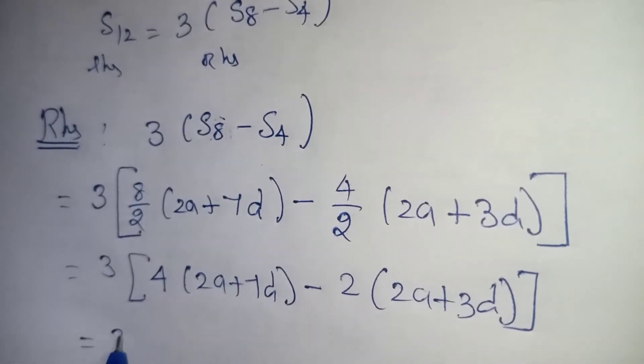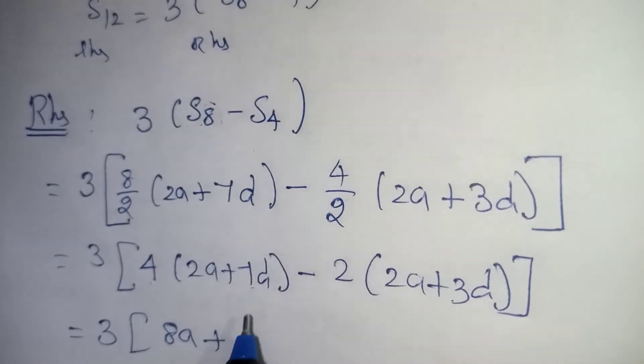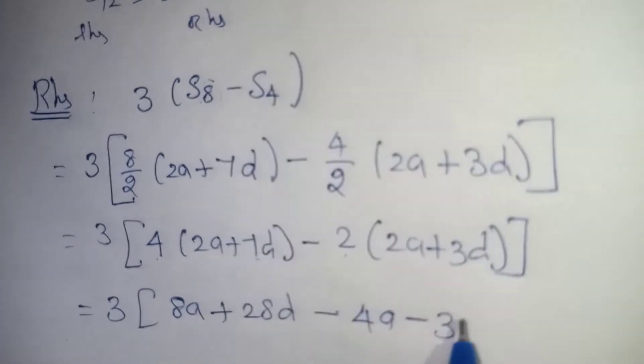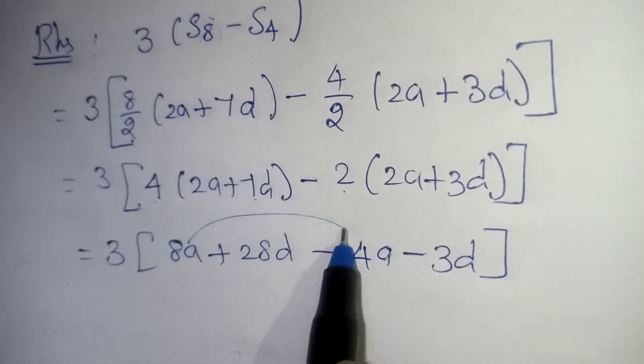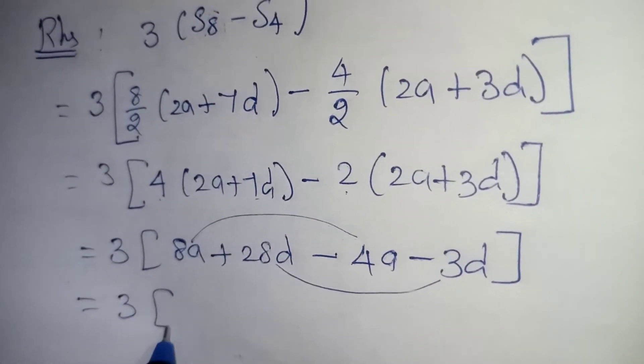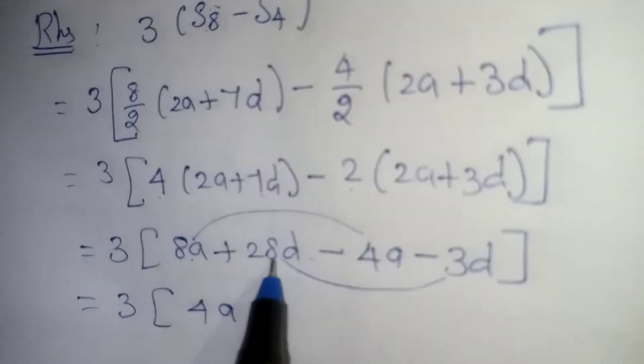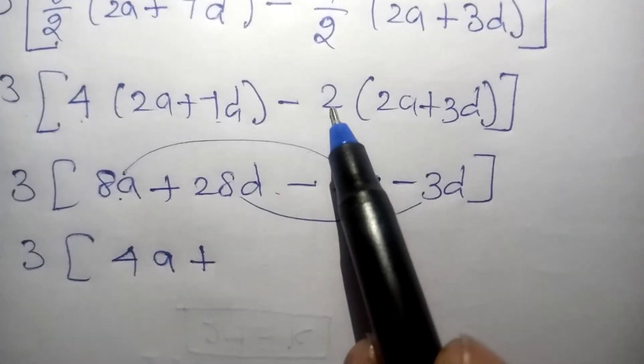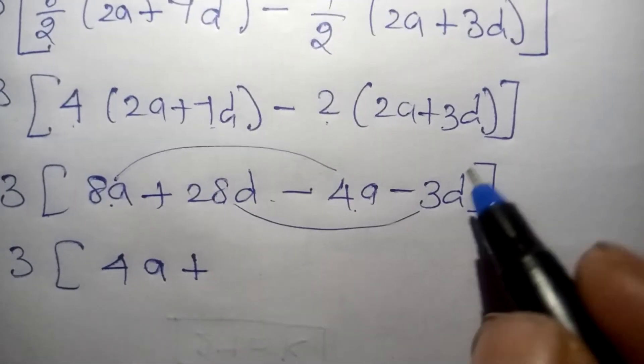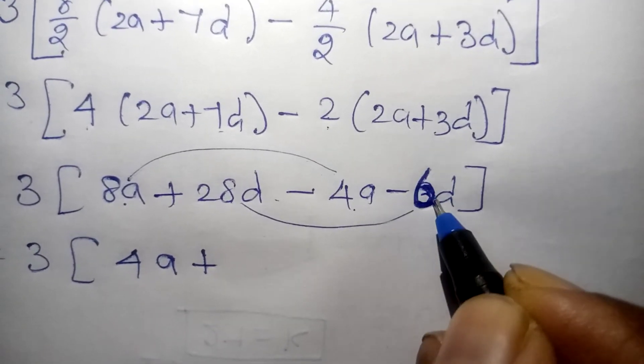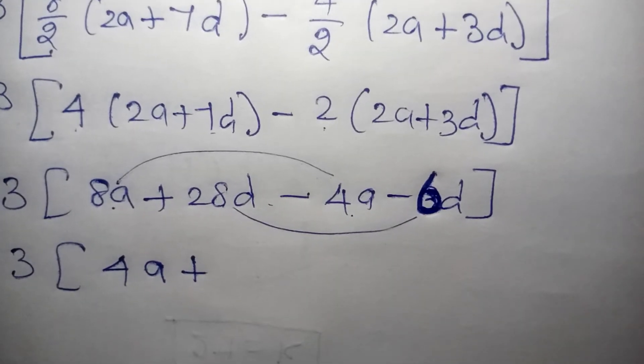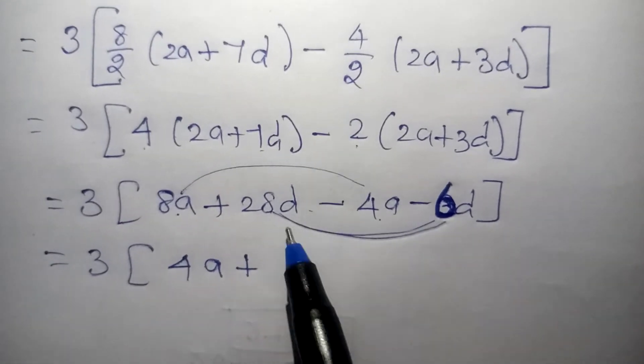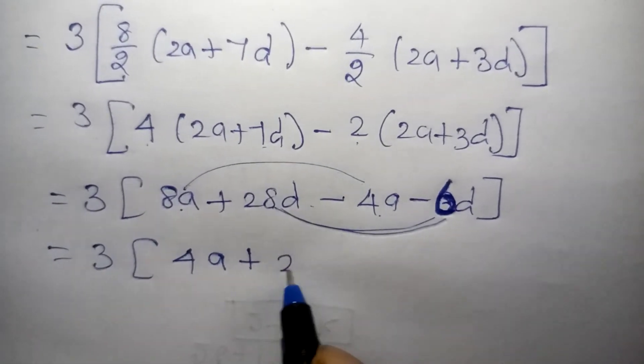So 3, 4 2's are 8a, plus 4 7's are 28d, and minus 2 2's are 4a, plus and minus, minus 3d. So we have written. Now let us combine the a value and d value. Now 3 times, 8a minus 4a is 4a, 28d minus 3d will give you... Children, here 2 2's are 4a is written. 3 2's are here, actually 6d is there. So you have written wrongly, that is 6d. So while you are writing, you just check it up before giving your paper.